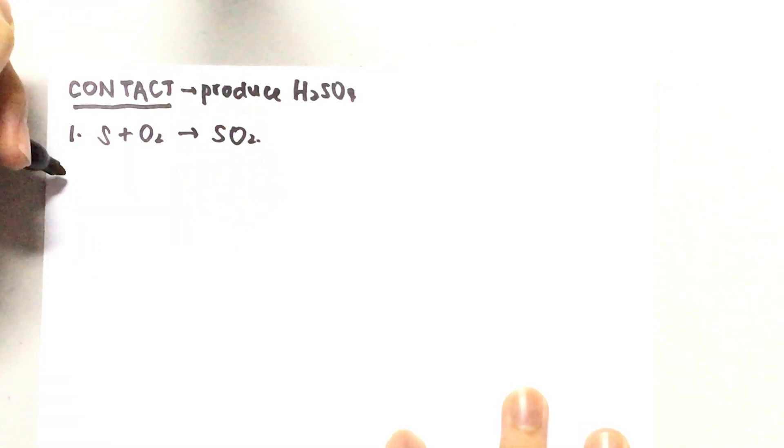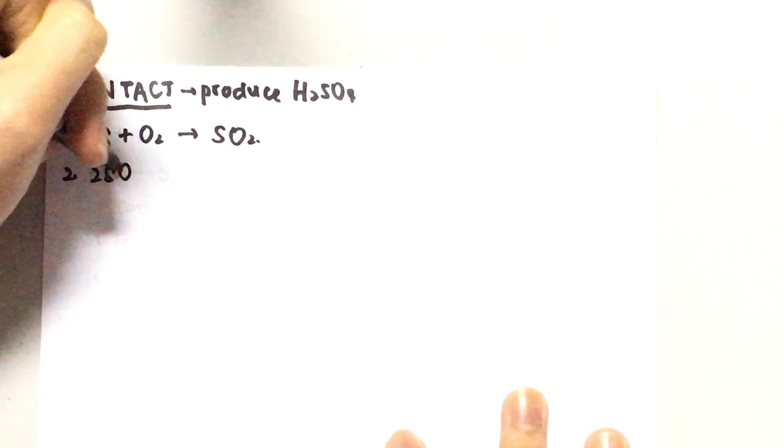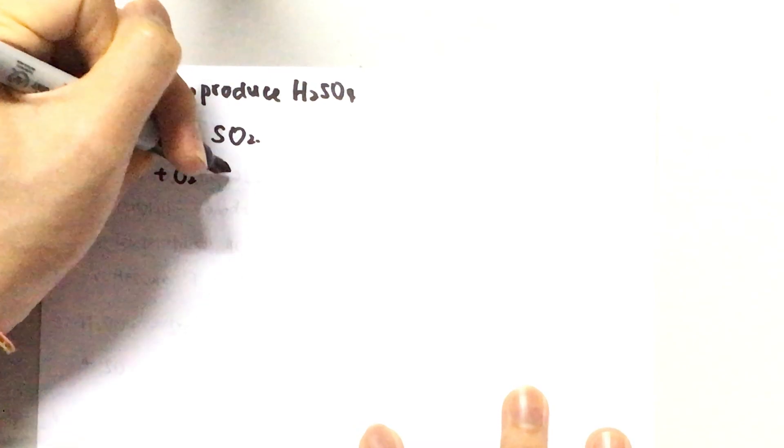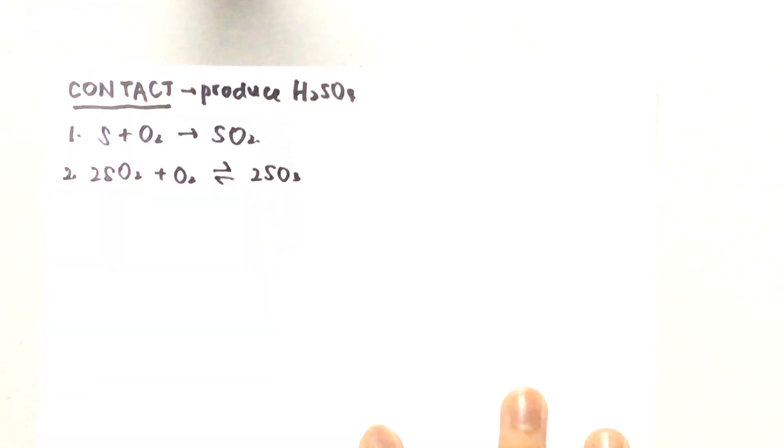The next step is the most complicated step. We're going to take sulfur dioxide and then further react it with oxygen to give us sulfur trioxide. Now you're going to notice that this is a reversible reaction, which means that it will achieve an equilibrium.